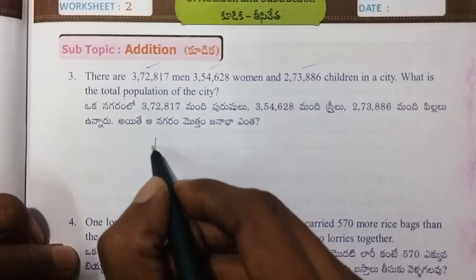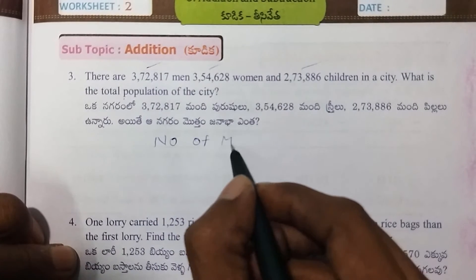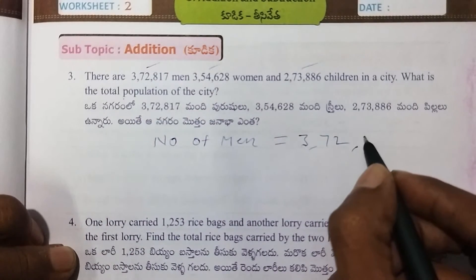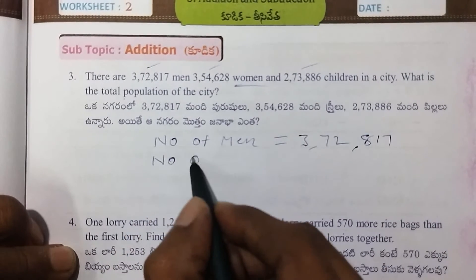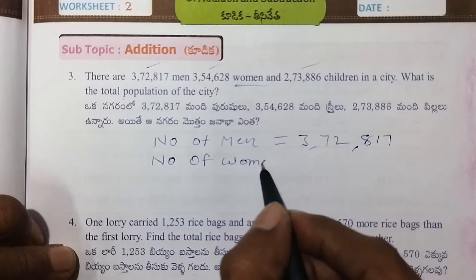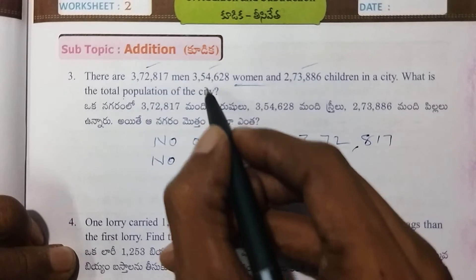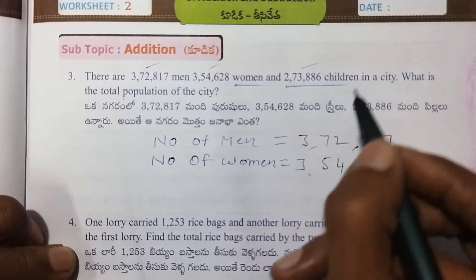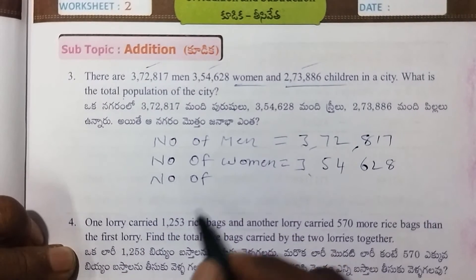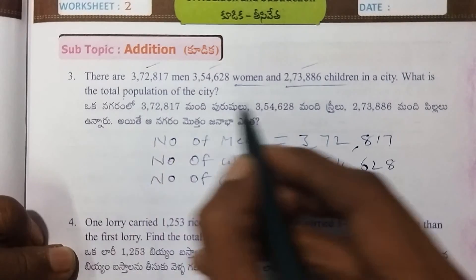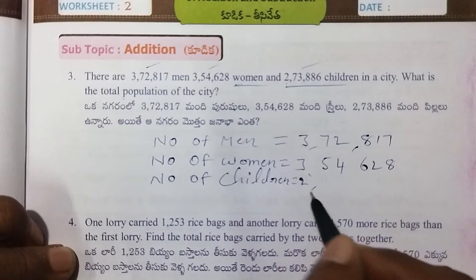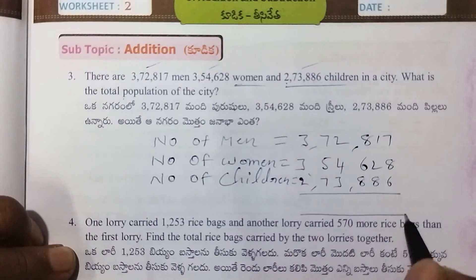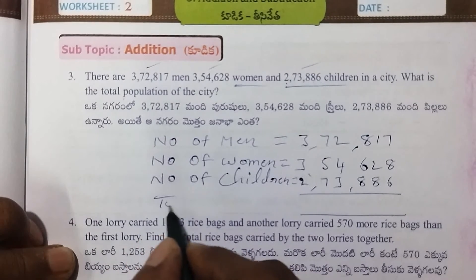First, number of men, which is 3,72,817. Next, number of women, which is 3,54,628. Next, number of children, which is 2,73,886. Total population.